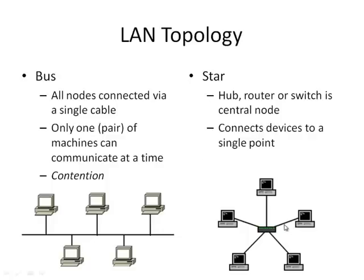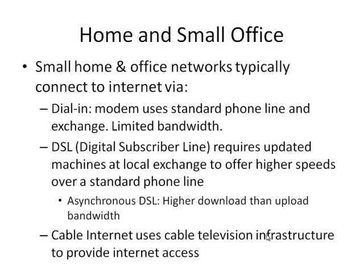Star networks use some kind of hub, router, or switch as a central node connecting all devices to a single central point. This hub or switch can allow multiple communications between different devices simultaneously, so any computer can communicate with any other while other pairs are communicating. However, it also introduces a single point of failure — if the central device breaks, the whole network goes down.